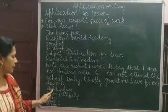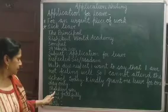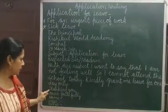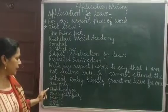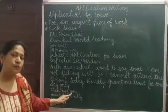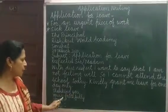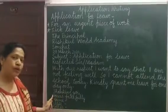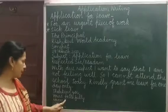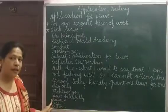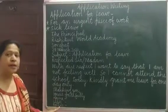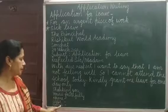After that, you will write the concluding lines: 'Thanking you' — with T capital and 'you' in small letters. In the same way, 'Yours faithfully' — Y capital in 'Yours' and F small in 'faithfully.' After that, you will write your own name, your class and section, and then your roll number.